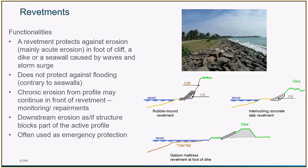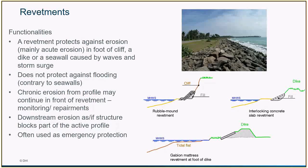Revetments are similar to seawalls — they protect against erosion and mainly acute erosion at the foot of a cliff or dike. The main difference is that they are not designed to protect against flooding. They can have different shapes to absorb wave energy. Importantly, they can be buried as part of a soft protection scheme including nourishment — by burying the revetment, we build an emergency protection into the dunes in case of very severe unexpected erosion.